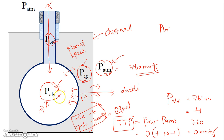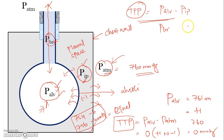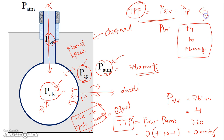The difference between the alveolar pressure and the intrapleural pressure is called transpulmonary pressure, also called transmural pressure: TPP = alveolar pressure minus intrapleural pressure. During a normal breathing cycle, the transpulmonary pressure varies from +4 to +6 mmHg. This can be regarded as the pressure acting on the wall of the alveoli, distending it. If it is less, the alveoli will shrink more; if it goes above +6, the alveoli will expand more.